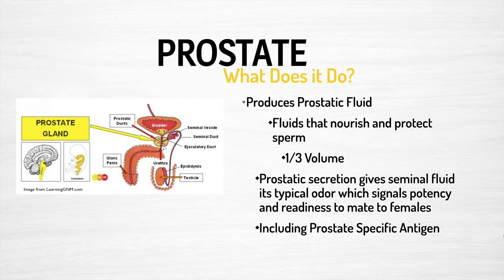When talking about any area of the body, we want to talk about what does it do — what is the function of the organ in question? The prostate produces prostatic fluid. It is a walnut-shaped gland that sits below the bladder surrounding the urethra. The gland produces the fluids that nourish and protect the sperm, making up one-third of the volume of seminal fluid. The prostatic secretion gives the seminal fluid its typical odor, which signals potency and readiness to mate to females, and this includes prostate-specific antigen.